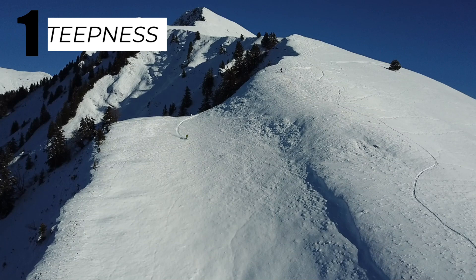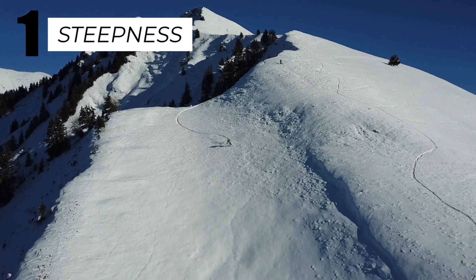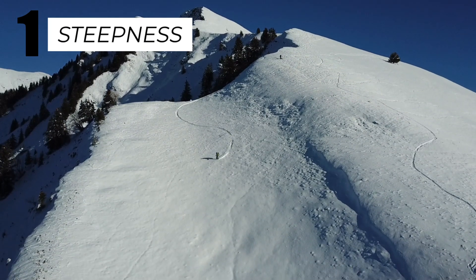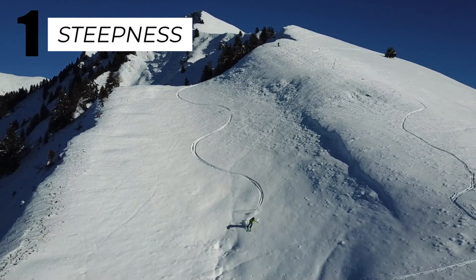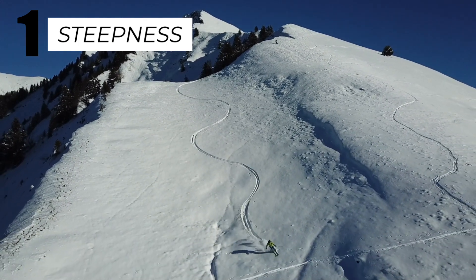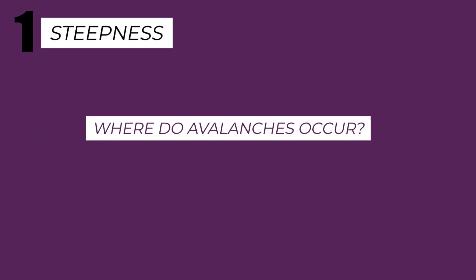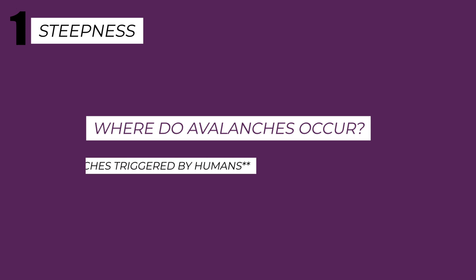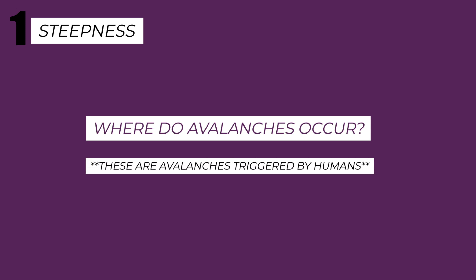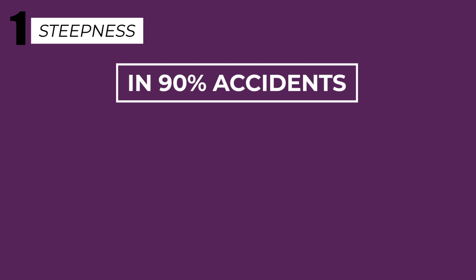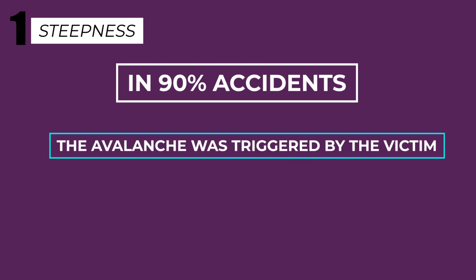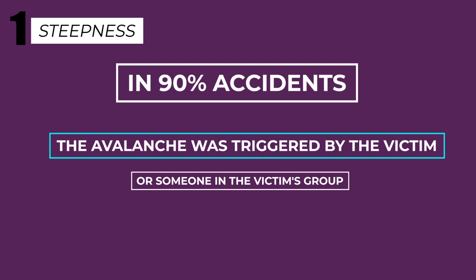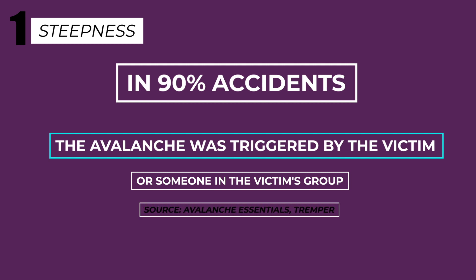Number one: steepness, also known as gradient or slope angle. The steepness of a slope is extremely important to avalanches. Let's look at the frequency of avalanches plotted against the steepness of the slope. Bear in mind that this shows human-triggered avalanches, which is useful because in nine out of ten avalanche accidents involving skiers and snowboarders, the avalanche was triggered by the victim or someone in the victim's group.